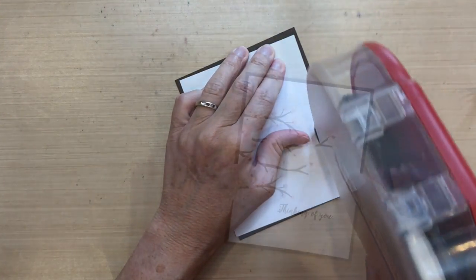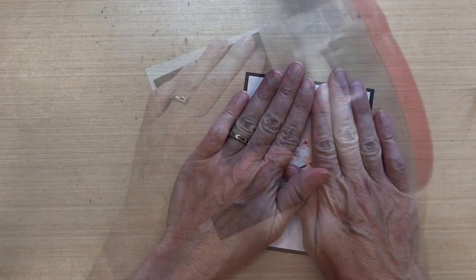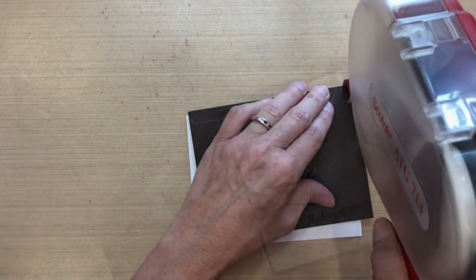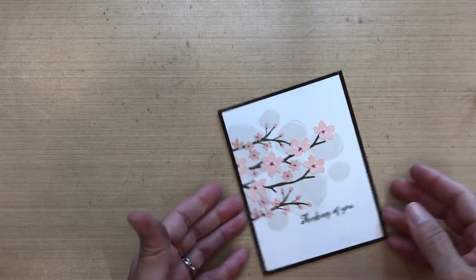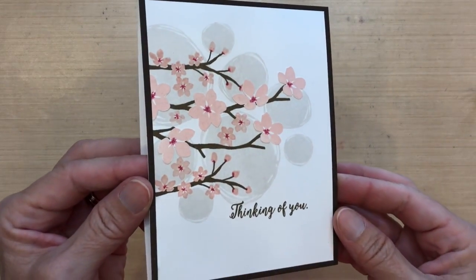I'm going to put some ATG Tape Runner on the back and adhere it to some Early Espresso. It's just a dark brown cardstock. Then I'll put Tape Runner on the back of this and adhere it to my card base which is just Neenah Solar White, and that is the card for today.